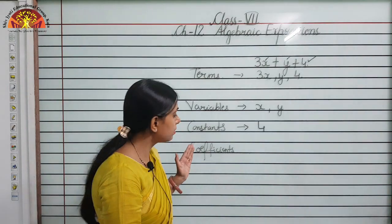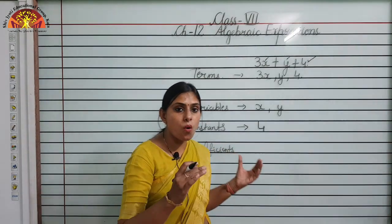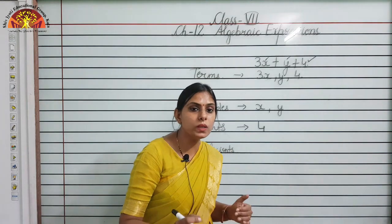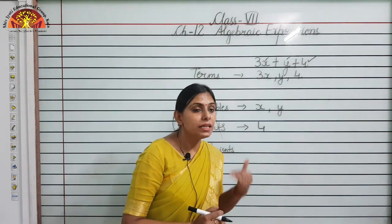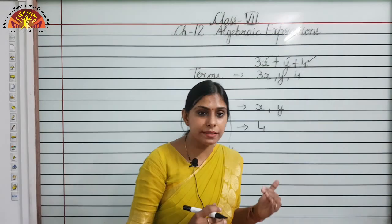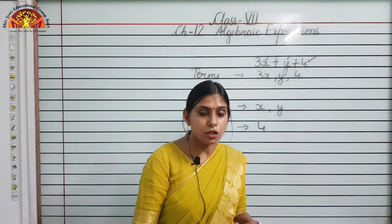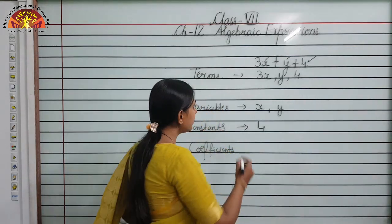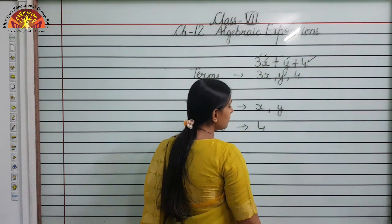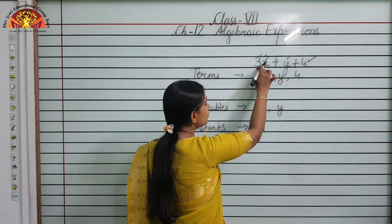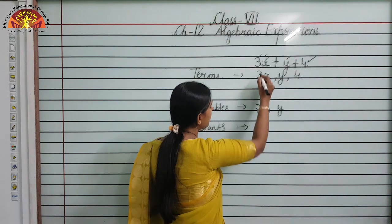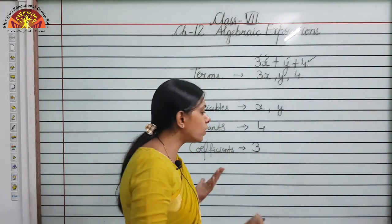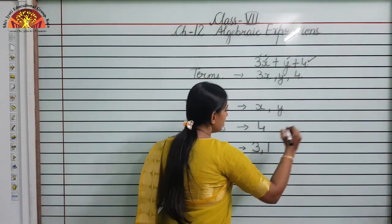What is a coefficient? Whenever a constant is multiplied by a variable, that constant is known as a coefficient. For example, in 3x, the coefficient of x is 3. For y, since there is no number in front, by default it is 1. So the coefficient of y is 1.